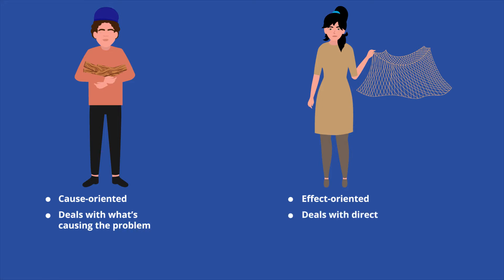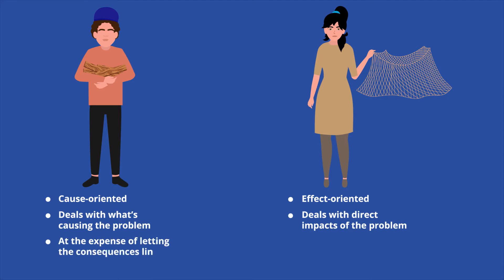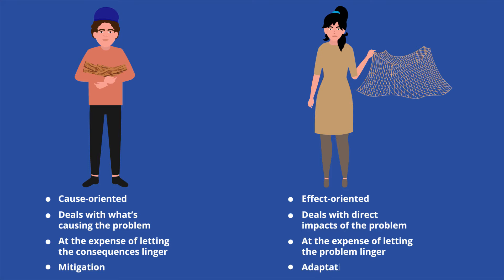Following Gil's net strategy might save more animals, but it could also prolong the issue and cause more critters to get swept into the river. On the other hand, listening to Adir might prevent more animals from falling into the river, but animals that do fall in could get injured or drowned.